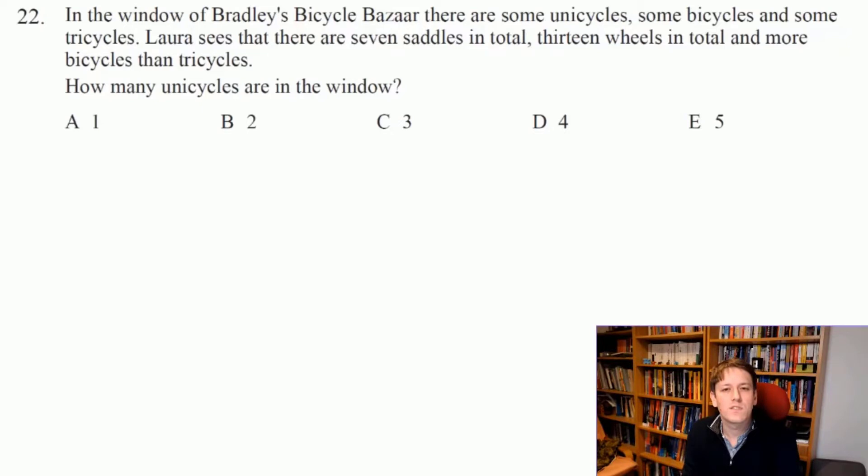We have some unicycles, bicycles, and tricycles. Now each of these will have one saddle each, so if I let the number of unicycles be U, bicycles B, and tricycles be T, then when I add those together I must get 7 because there are 7 saddles.